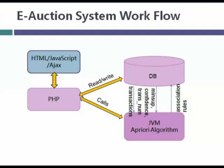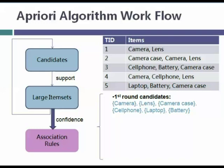Now let's look at the inside of the APRU algorithm. The APRU algorithm takes two steps to generate association rules. The first step is to calculate the large item sets. If we have n items, there will be 2^n item sets. Calculating support for all of them would be exponential running time, which is very expensive. So we use the downward closure property: for a non-large item set, all its supersets must also be non-large, so we don't need to calculate those supersets.